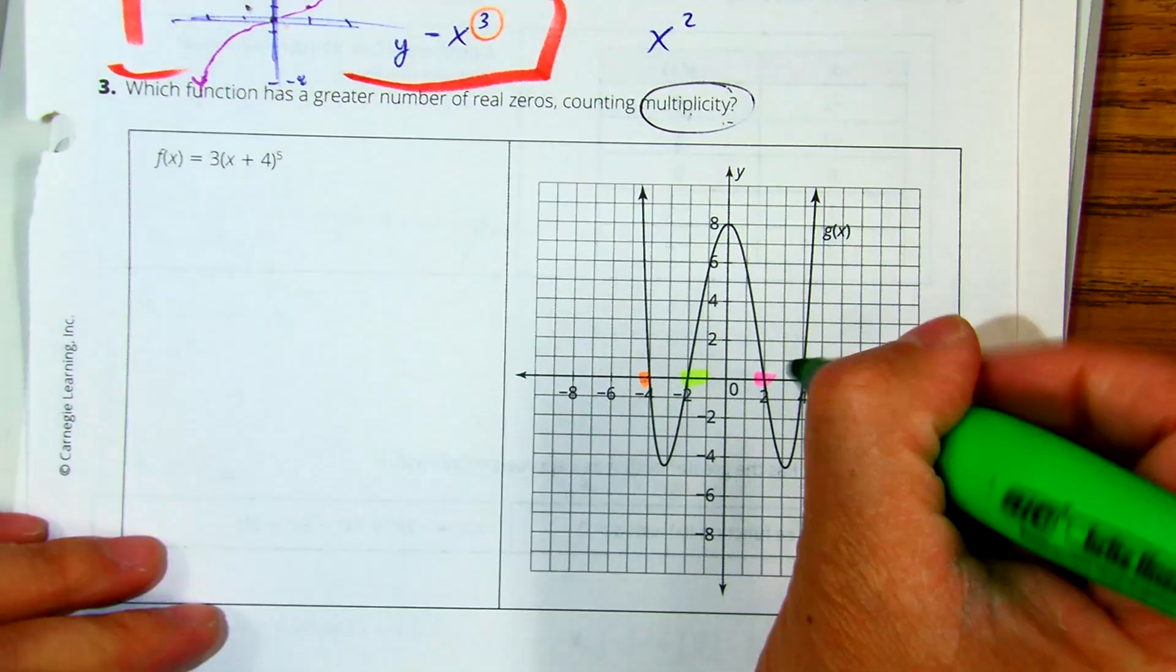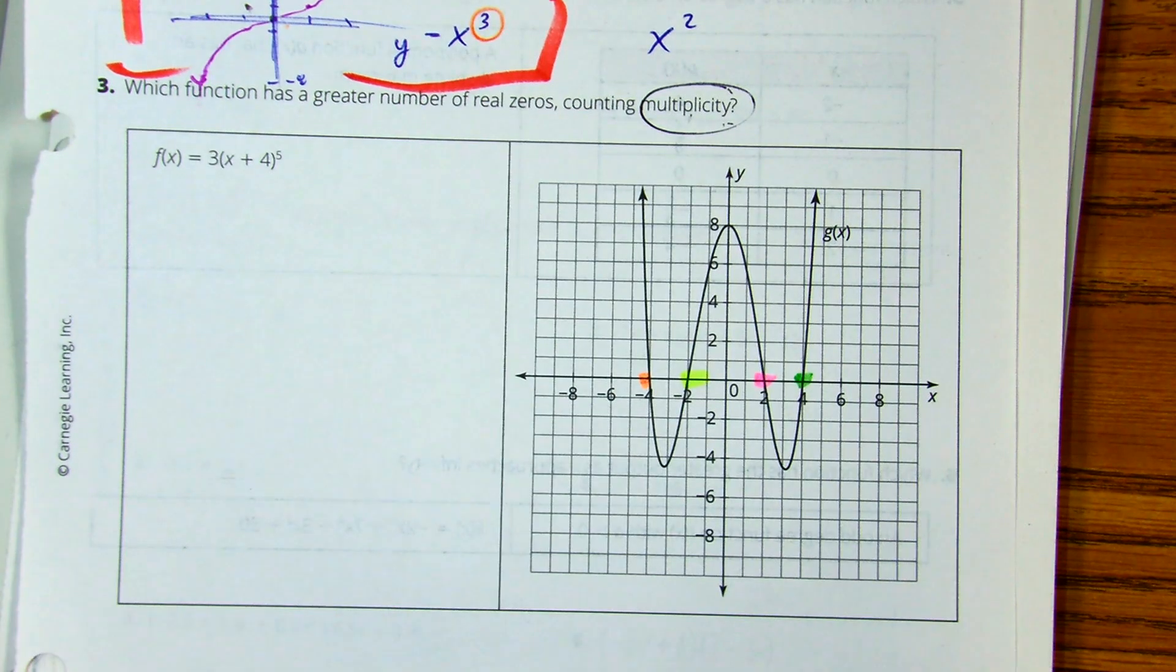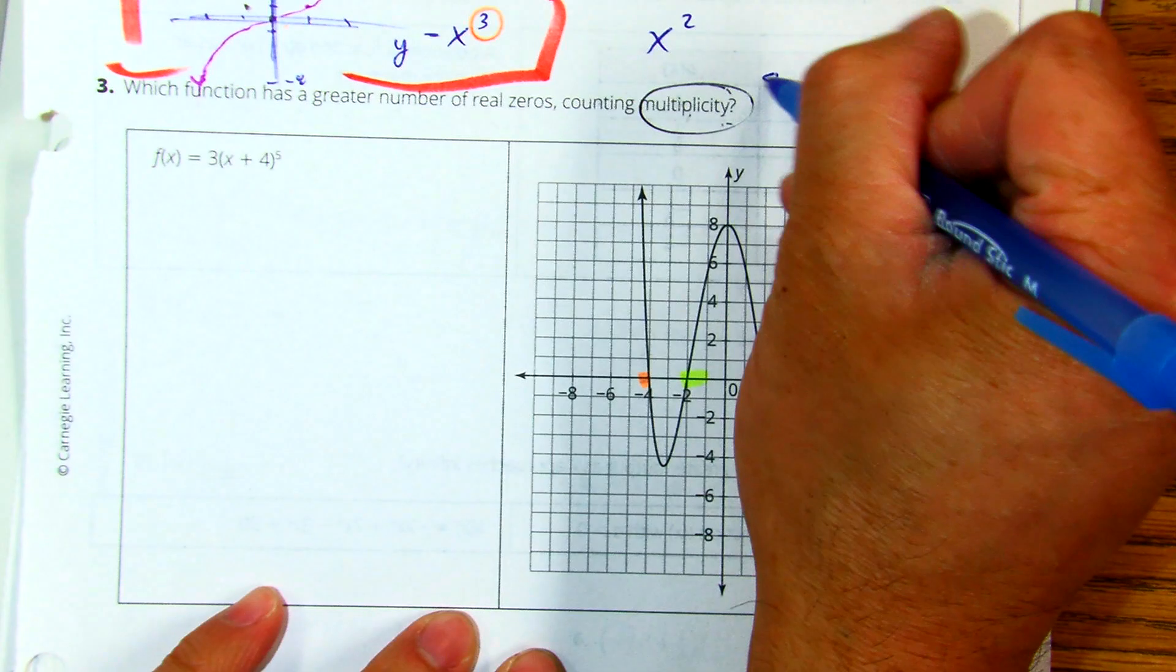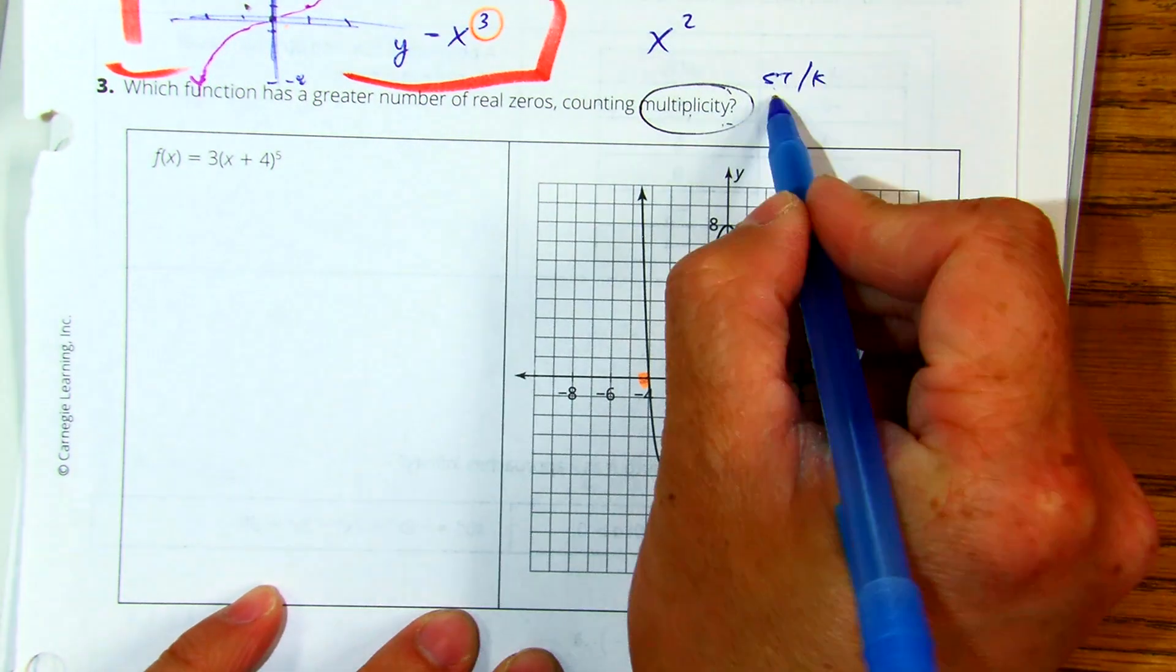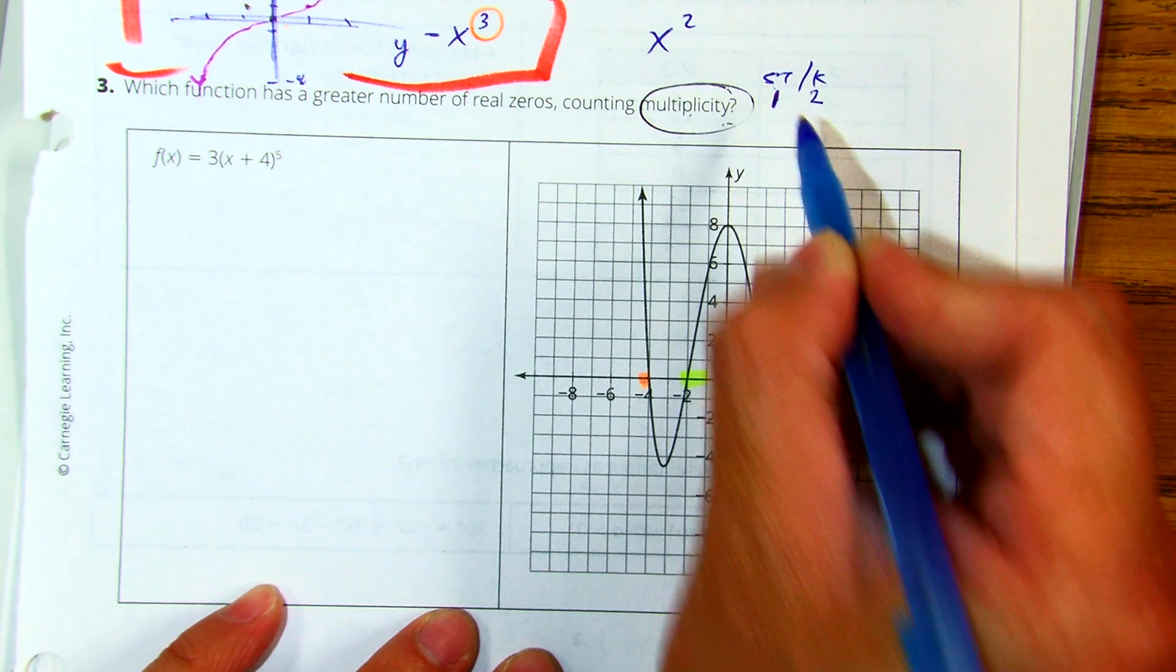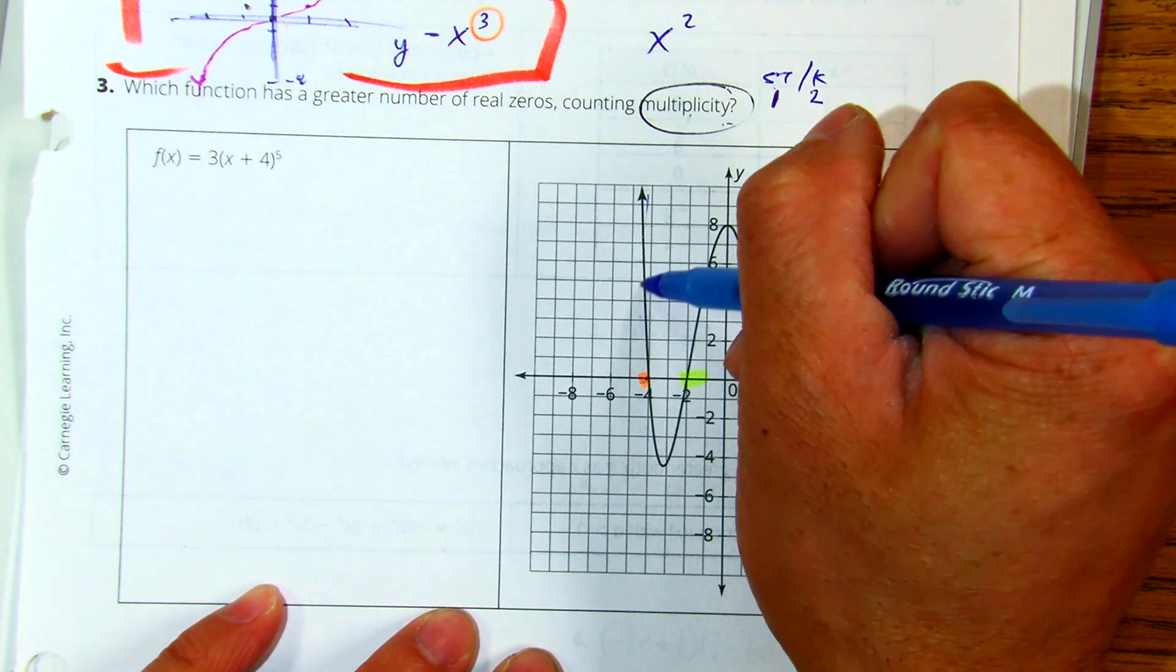But something I notice is that what does it do at those graphs? Does it shoot through or kiss? It shoots through. So shoot throughs are odds or one and a kiss is a two. So this is saying you have a multiplicity of one. So this is a one,